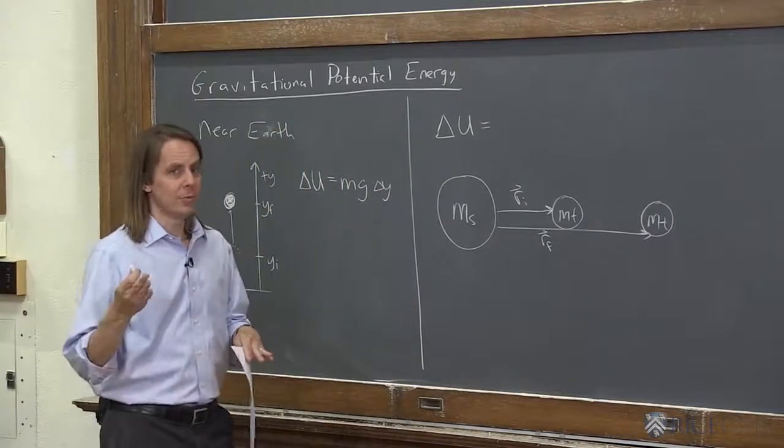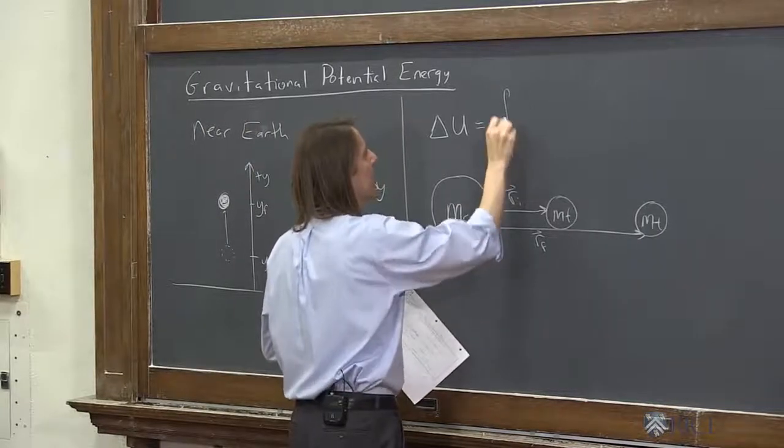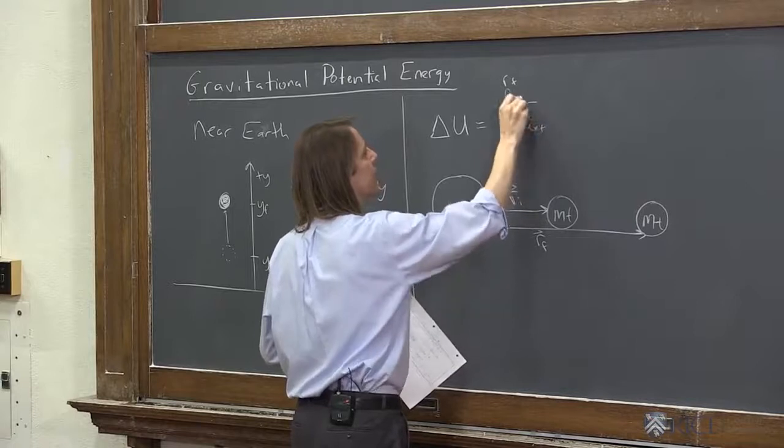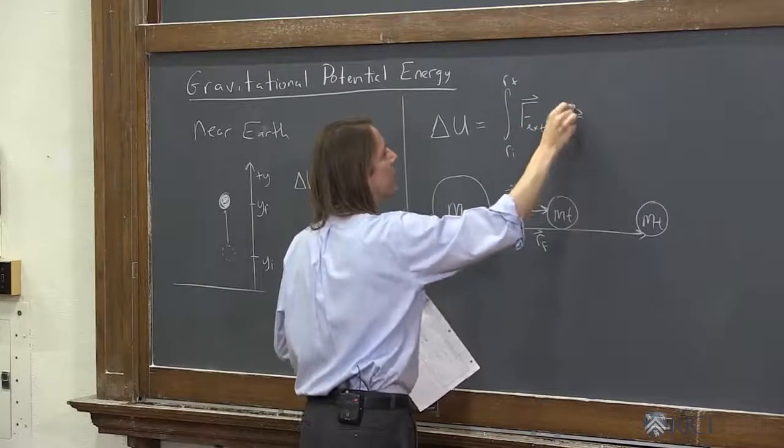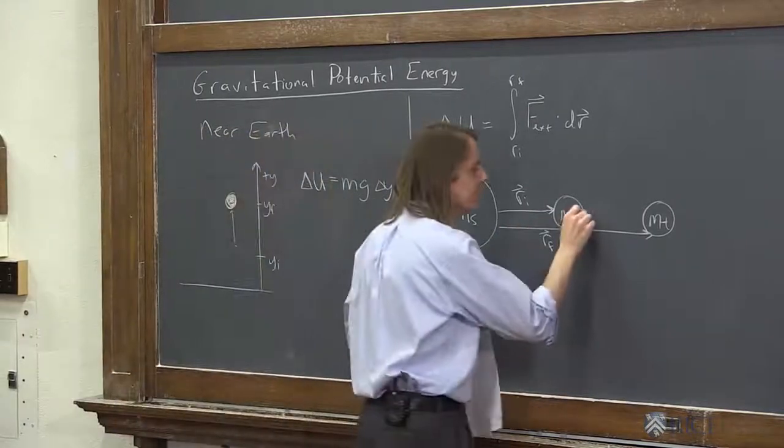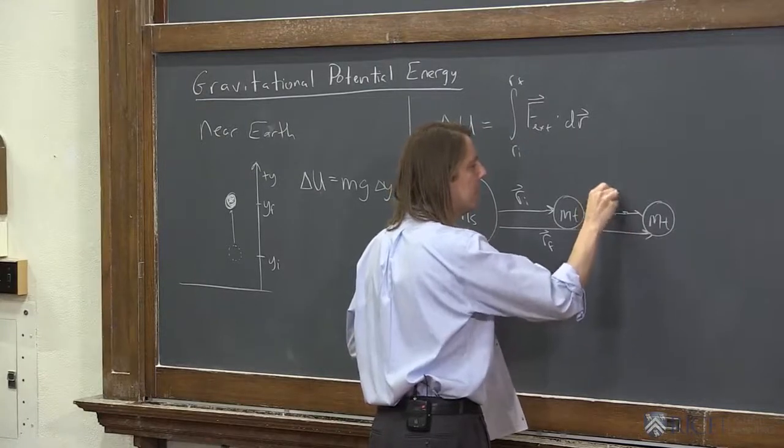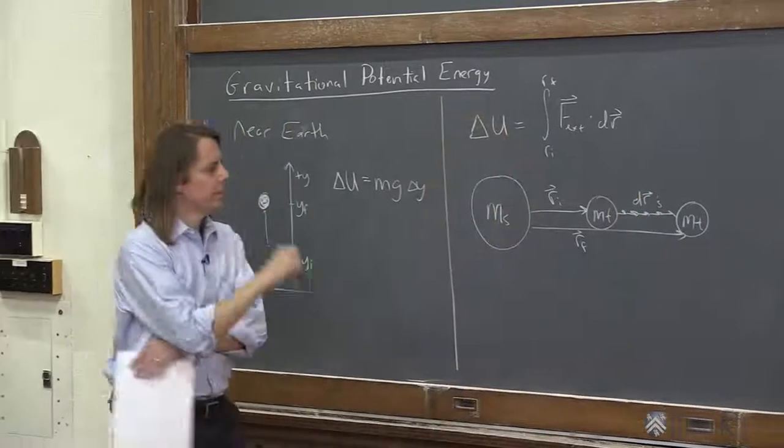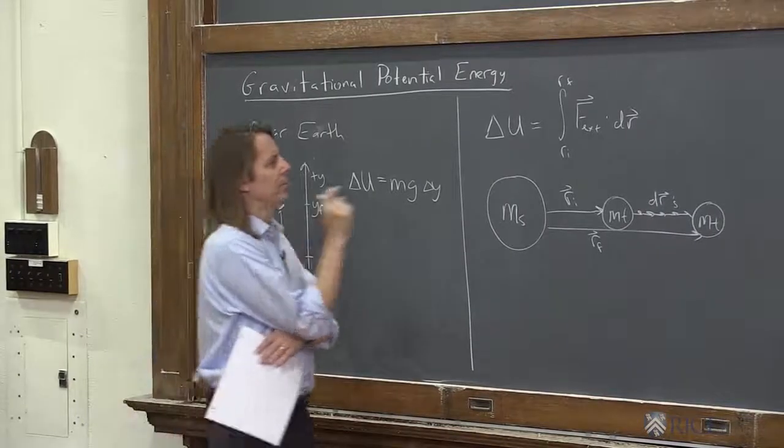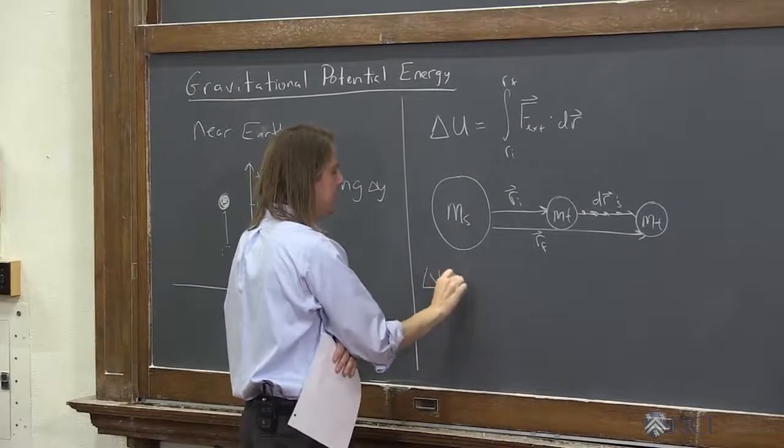If an external agent does the work, you increase the potential energy, so we're going to use that one. The integral from ri to rf of the external force dotted with dr should be the change in potential energy, where the drs are just the little steps along the path. That should be everything we need. Now we just have to plug in the force, do the calculation, see what we get.